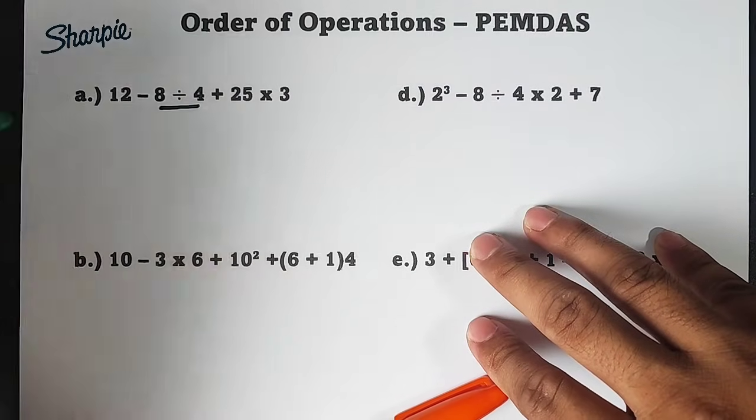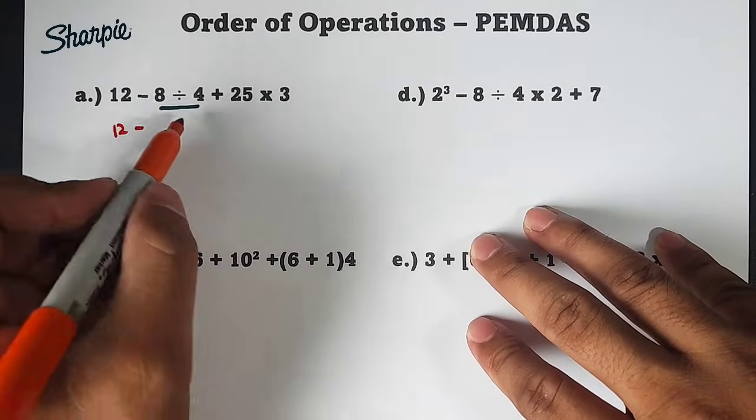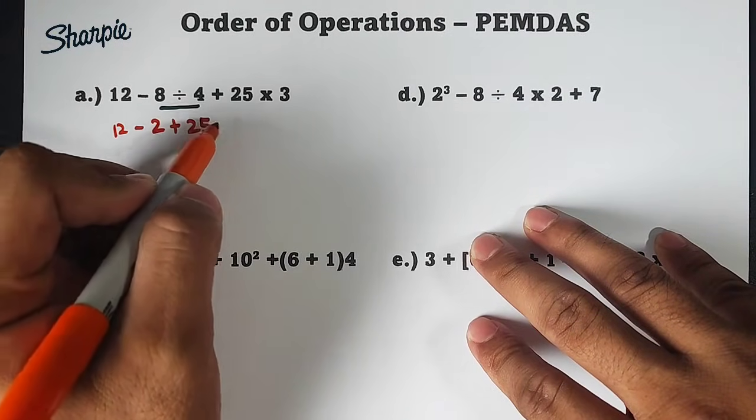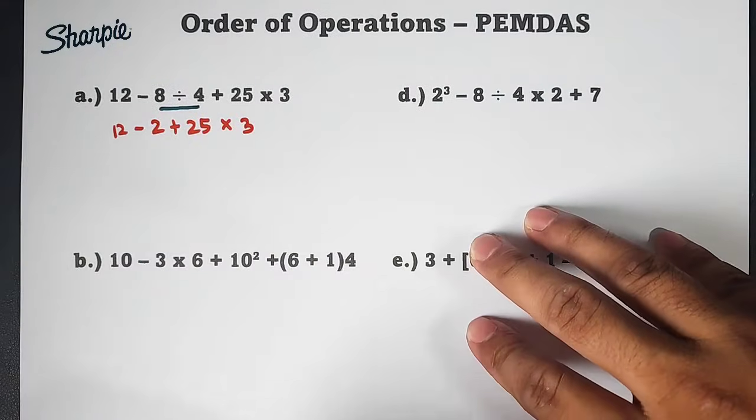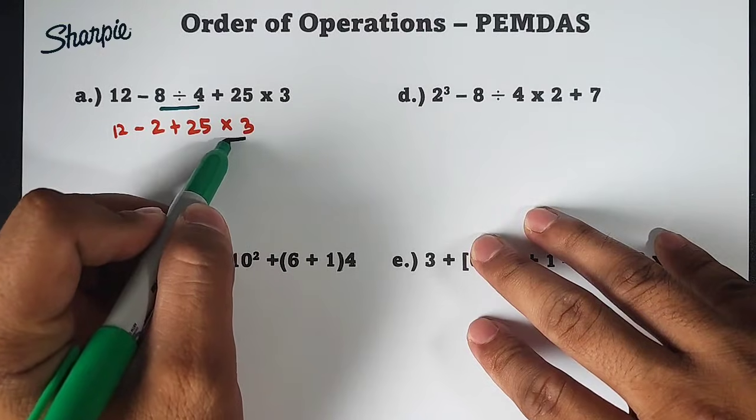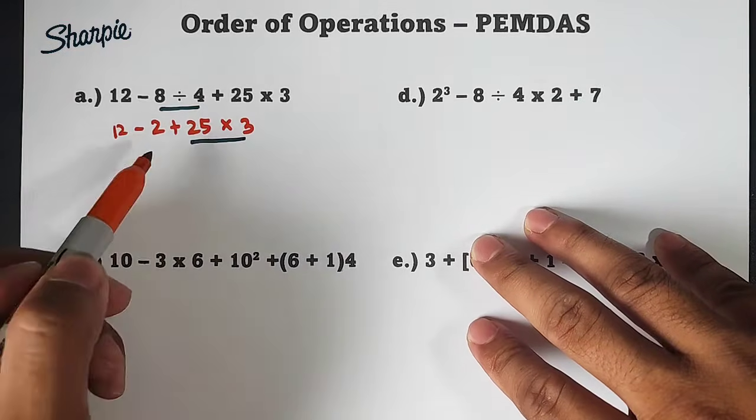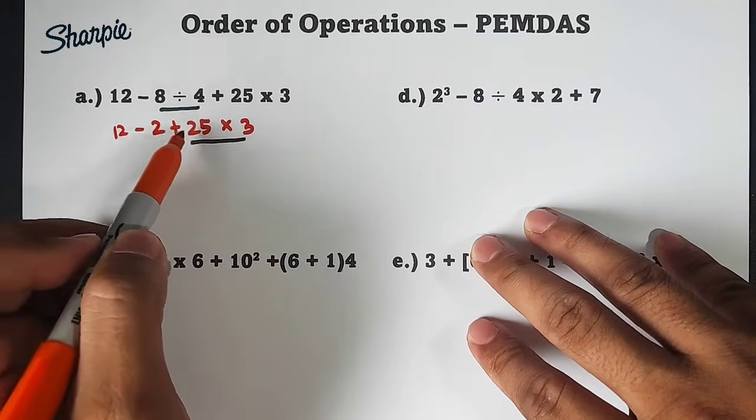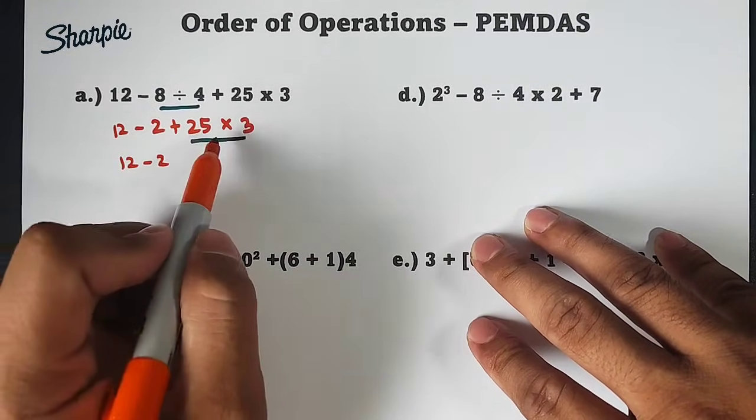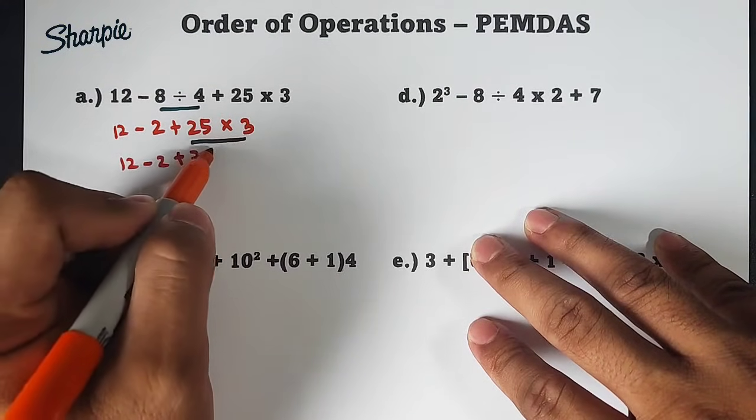First step is to divide 8 by 4. So that is 12 minus 8 divided by 4, that is equal to 2, plus 25 times 3. So as you can see, we are done with the division. Next is multiplication. We have 12 minus 2, and then we will multiply 25 times 3, and that is plus 75.